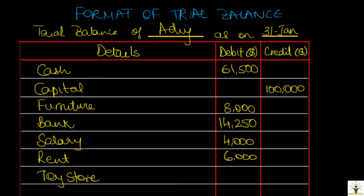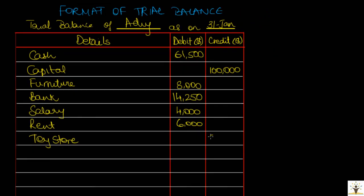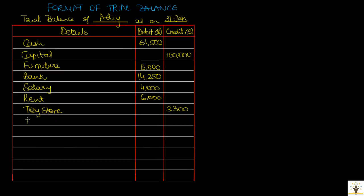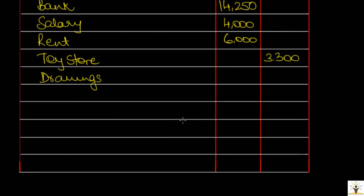Toy store account, which is a creditor of Andy's business. Toy store account has a credit balance. Hence, amount will be written in the credit column. Drawings account, there is a debit balance in the drawings account of $5,000.